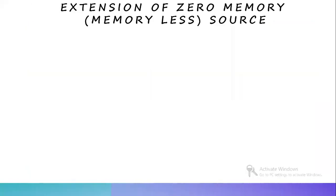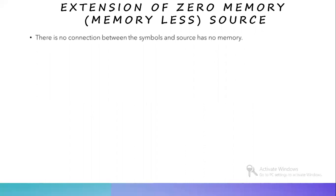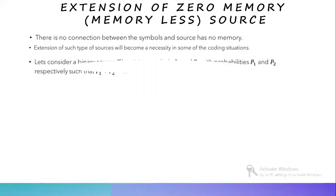Next, we'll be seeing about the extension of zero memory source or memoryless source. A zero memory source is a type of source in which there is no connection between any two symbols — the source has no memory. Extension of zero memory source becomes a necessity in some coding situations. Consider a binary source S emitting symbols s1 and s2 with probabilities p1 and p2 respectively, such that p1 plus p2 equals 1.